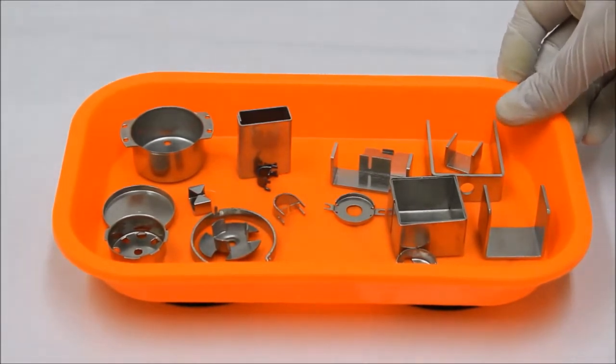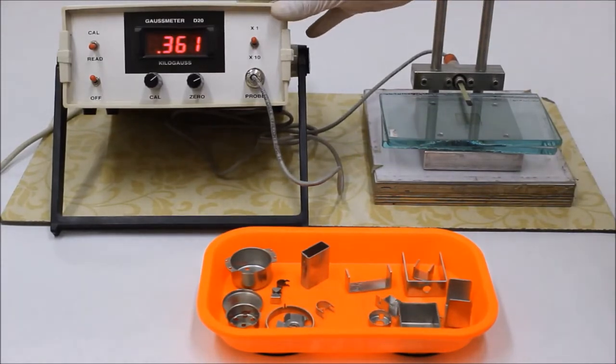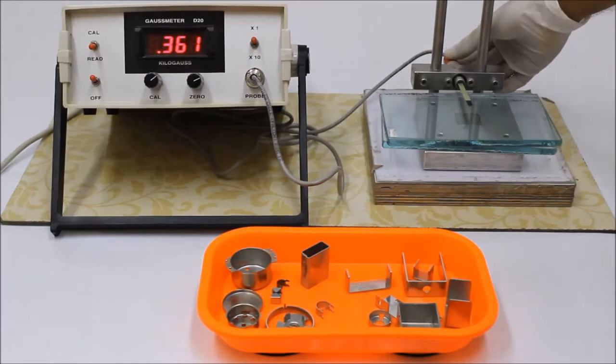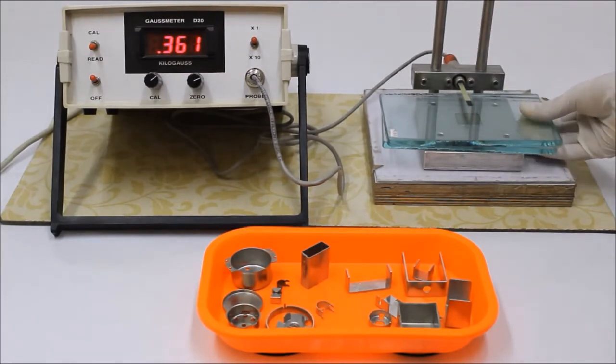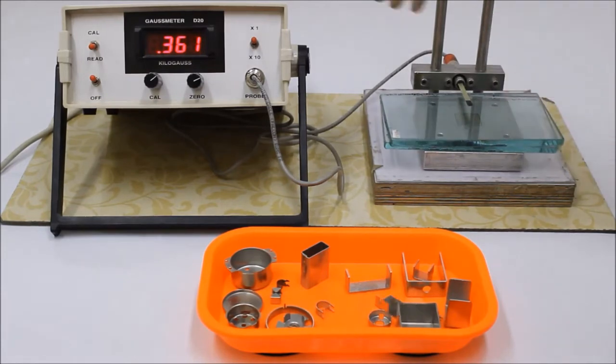This is an experimental test setup for detecting the magnetic field. This is a gauss meter, this is a Hall probe, and I have placed a magnet beneath these glass sheets. Now currently the reading is 361 gauss, which is the flux density being measured by the Hall probe.